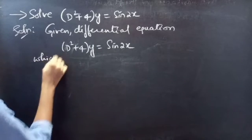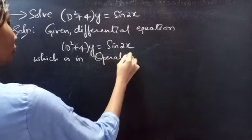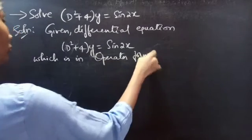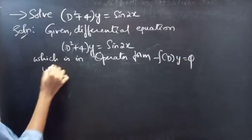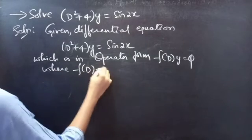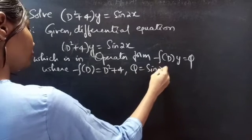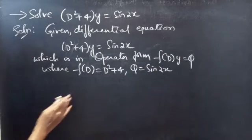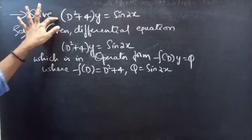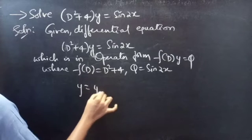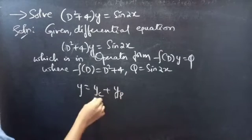We have the equation in operator form: f(D)·y = Q, where f(D) = D² + 4 and Q = sin 2x. Now we need to find the general solution to the given non-homogeneous equation using y = yc + yp, where yc is the complementary function and yp is the particular integral.